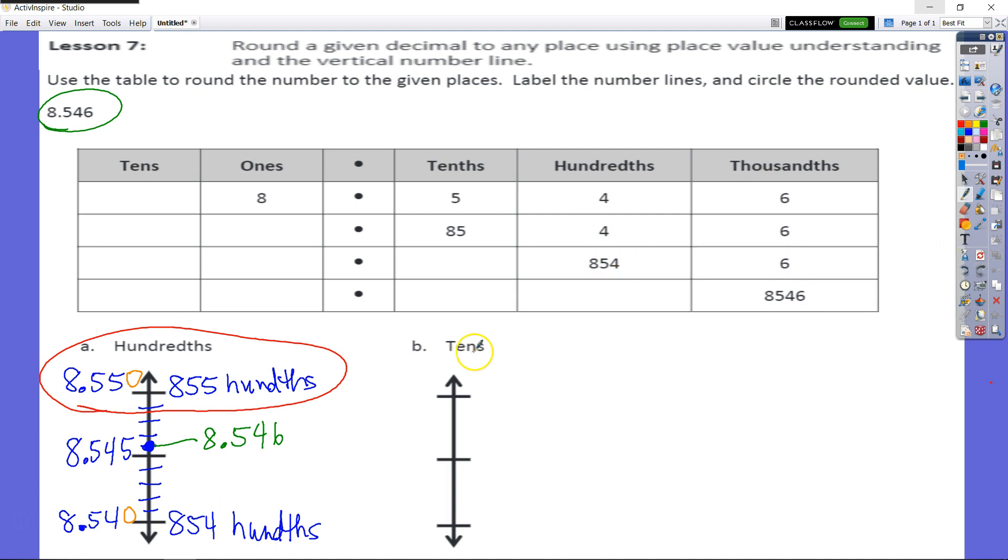Next, we're rounding to the nearest tens. So we want to round to the nearest ten. So our number is eight. Eight is going to fall in between what two tens? So it's going to fall in between zero and ten. So we're going to have zero tens, which is equal to zero. And we're going to have one ten, which is equal to ten. And of course, we see that our midpoint between zero and ten is five.